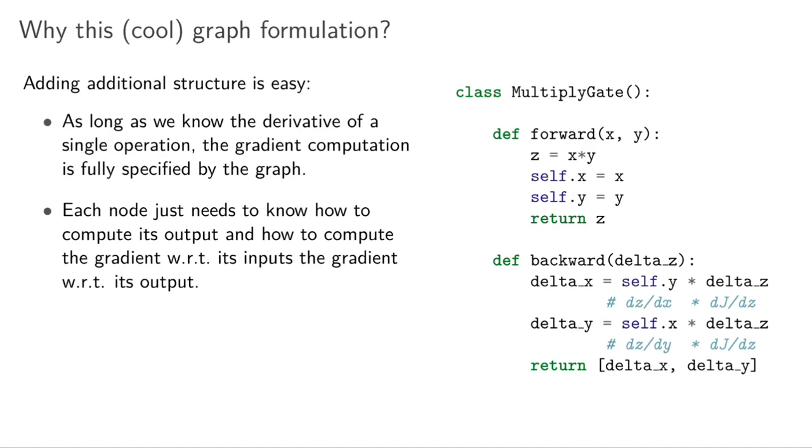So for each node, all you need to know is how to go from the input to the output, and then you also need to know how to get the gradient with respect to the inputs. As a kind of trivial example, if we had a very simple multiply gate which just took in two scalars like X and Y, and our node was Z, and Z is just X times Y,